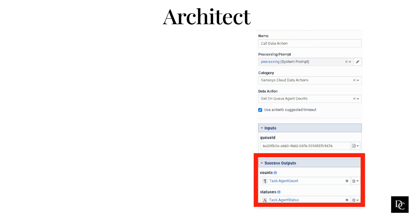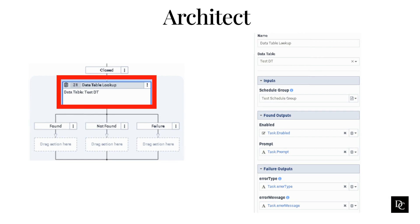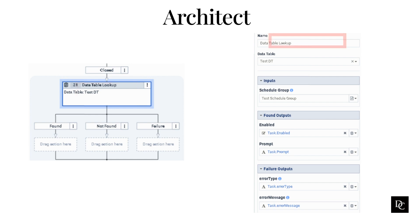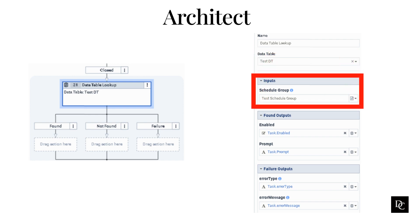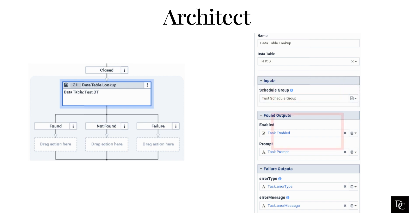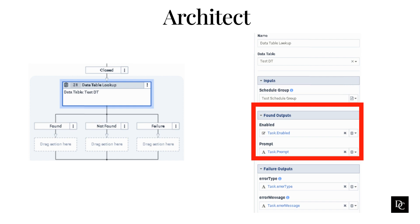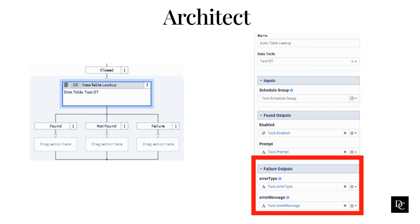Next, let's use the data table we just created. Use the data table lookup action to retrieve data stored in a Genesys Cloud data table. After adding the data table lookup from the toolbox, type a distinctive name for the action — the label you enter here becomes the action's name displayed in the task sequence. Select the data table by clicking the arrow and selecting the desired data table. Enter the reference key value you want to find — this would be the schedule group name. The found outputs will be the other columns in the data table, allowing the flow author to map the custom field values to variables within the flow, as well as map any resulting error type and error message. The developer will then set the found, not found, and failure paths based on information being returned.